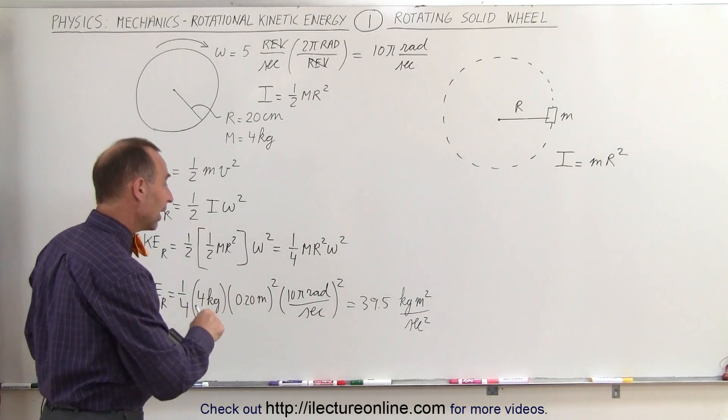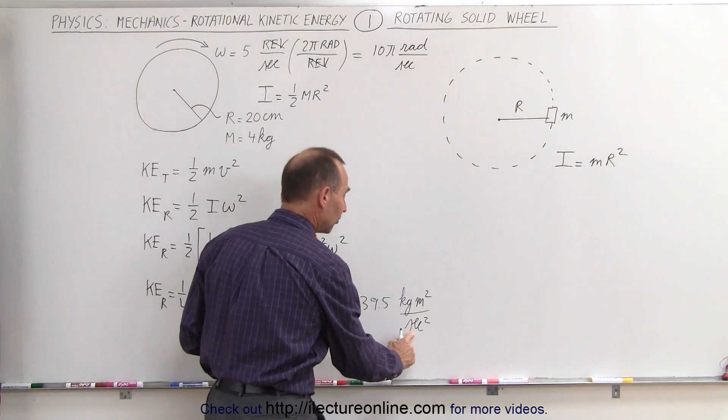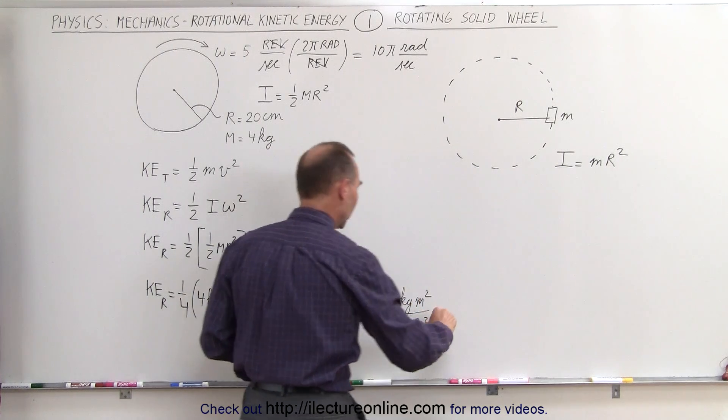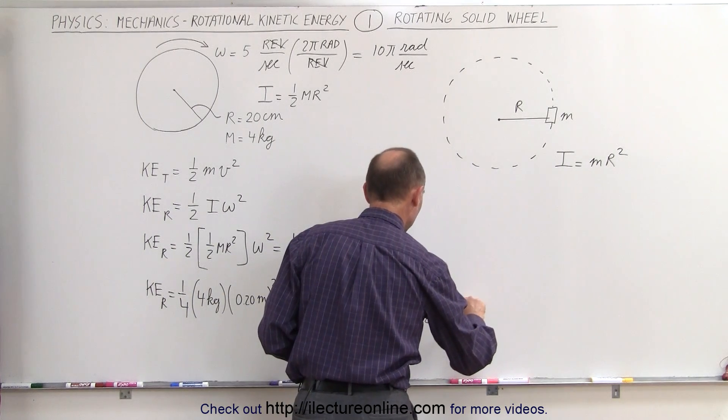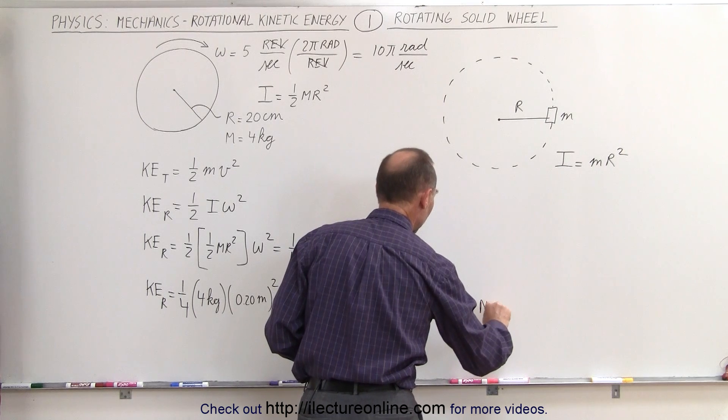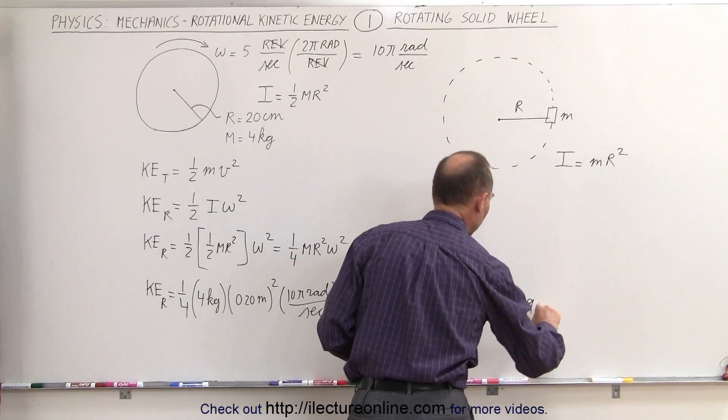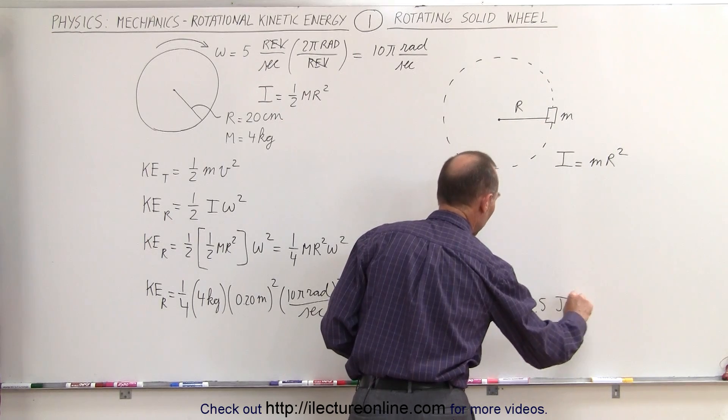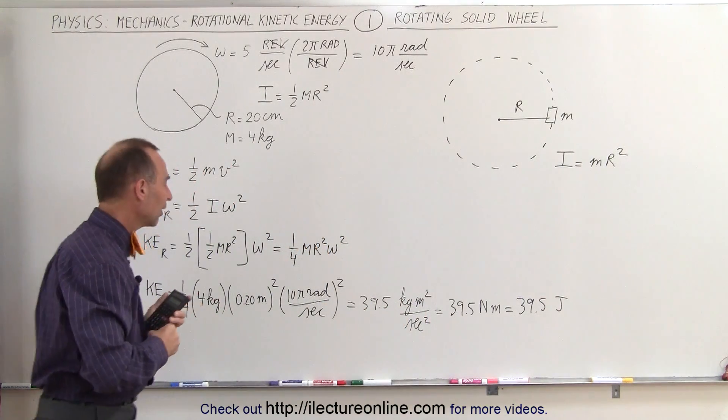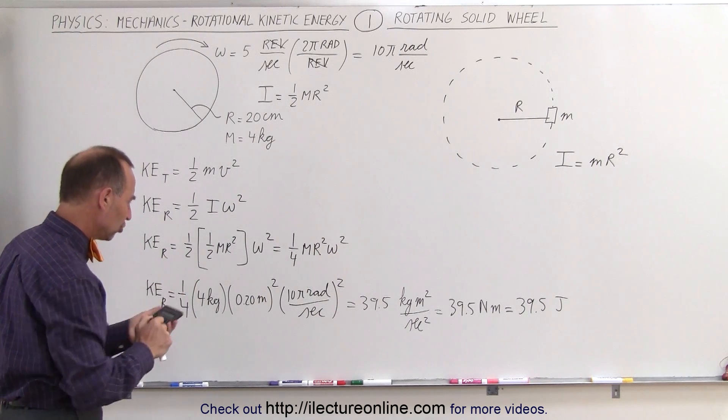And then if we convert that, notice a kilogram meter squared per second squared, or a kilogram meters per second squared is newtons. So this can be written as 39.5 newton meters, and newton meters is actually joules. So the answer is 39.5 joules for the rotational kinetic energy of that solid wheel.